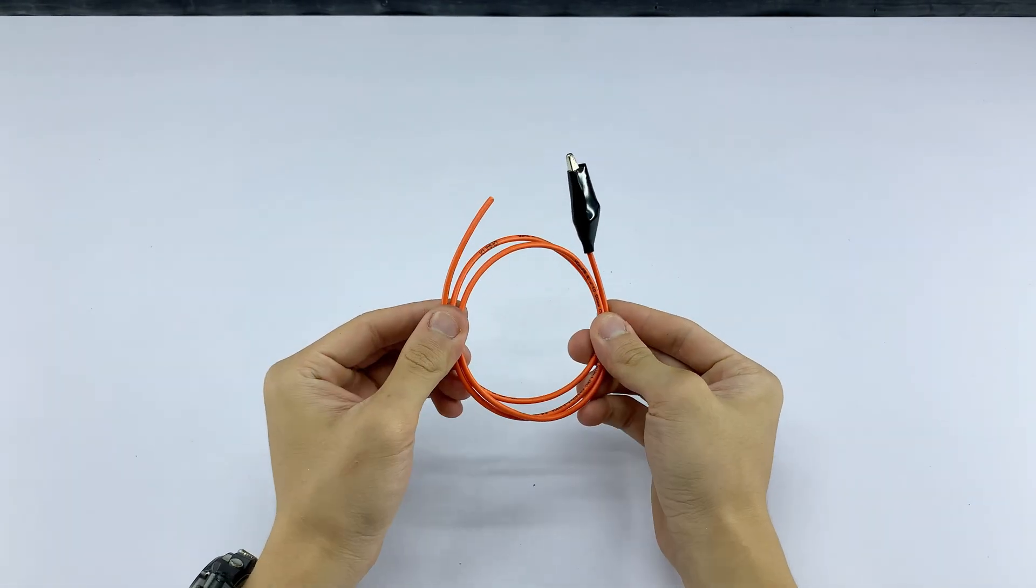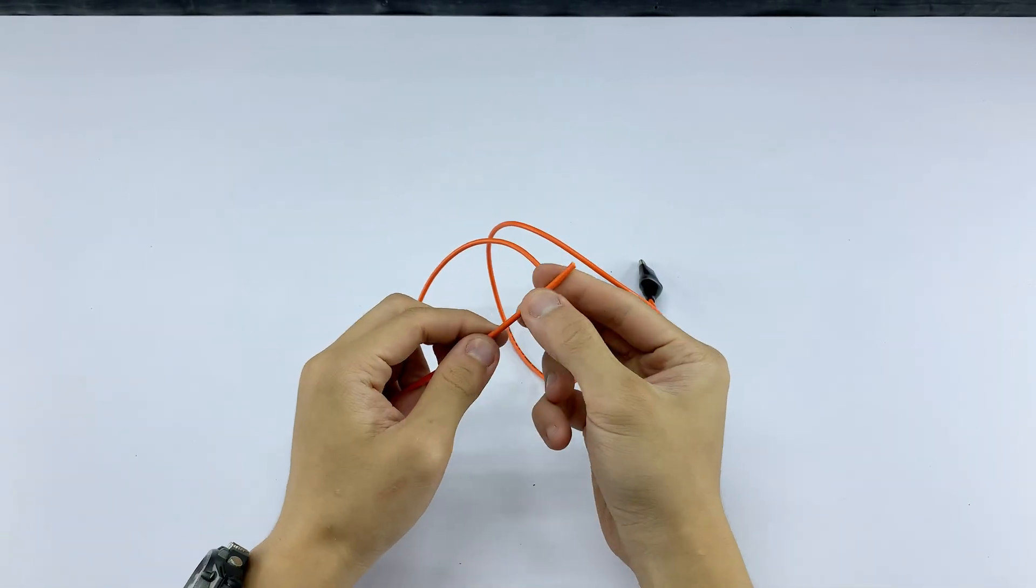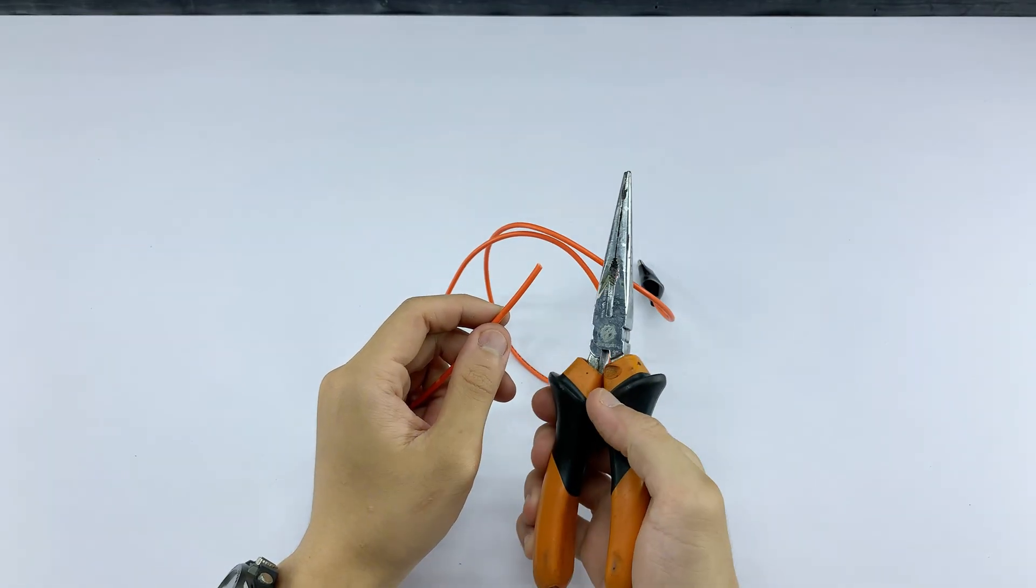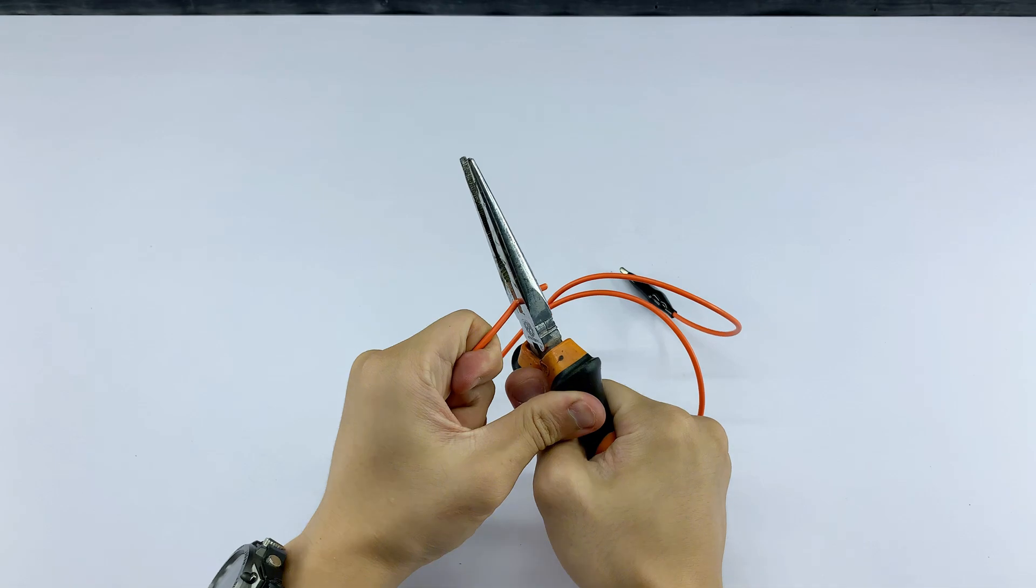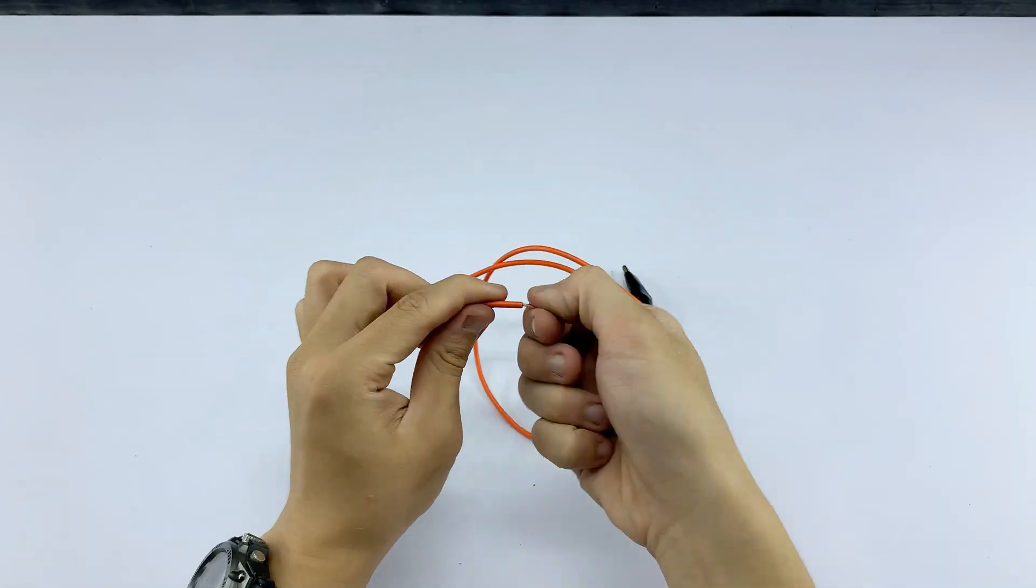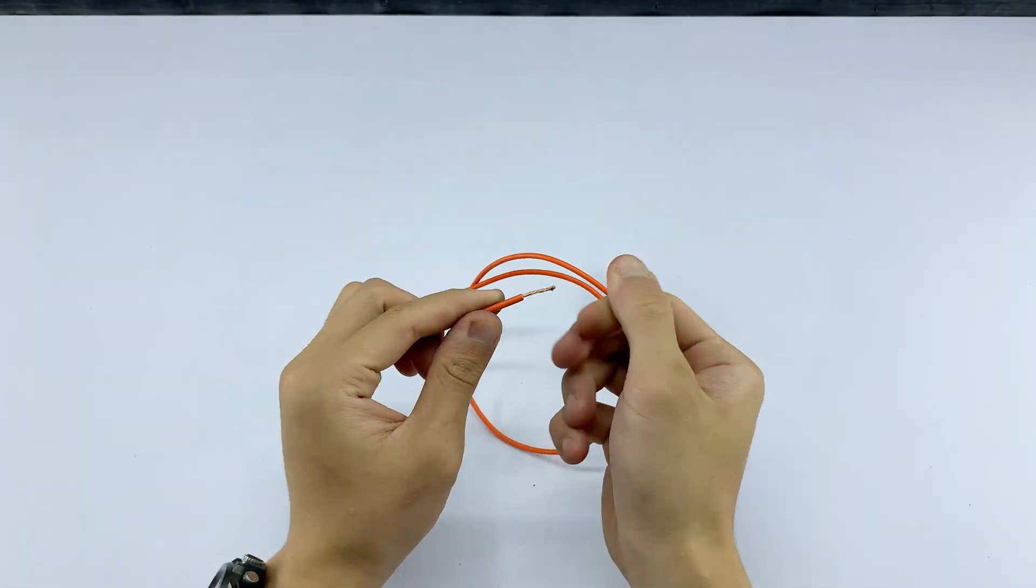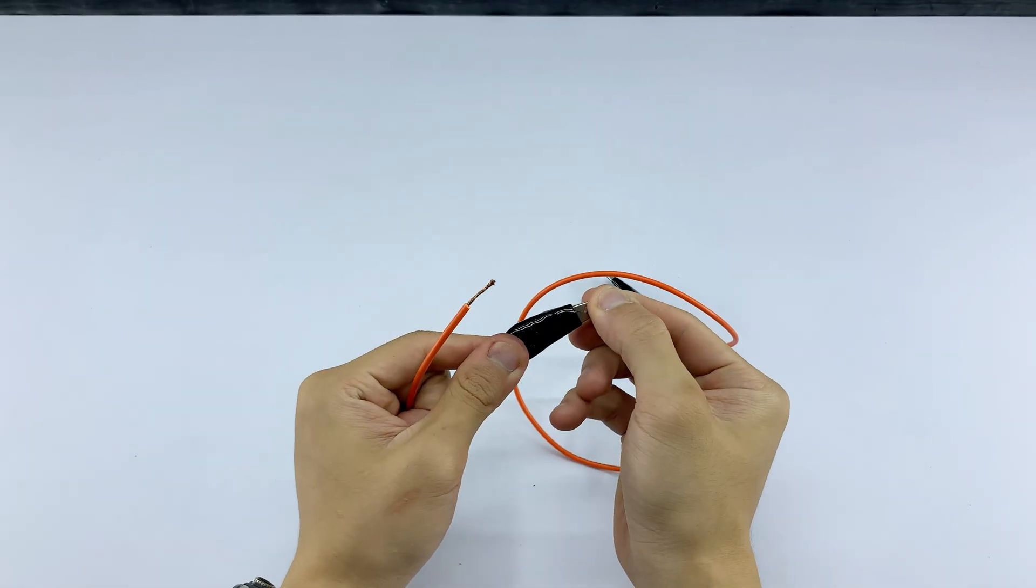Here's another power connection I'm preparing. I'm taking this orange wire, stripping one end, and then attaching an alligator clip to each side. This will be another essential part of our portable power setup.